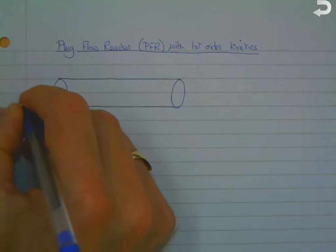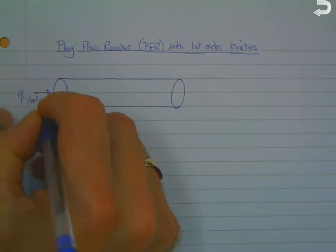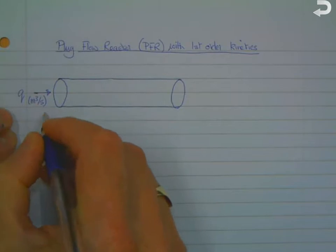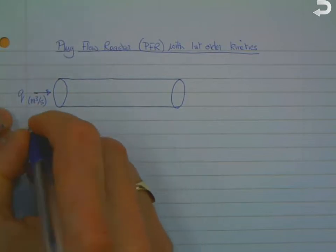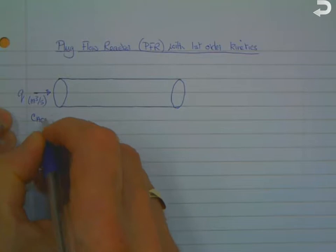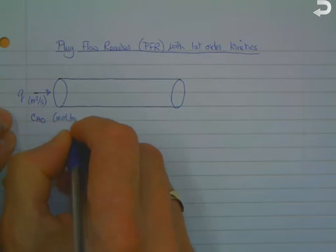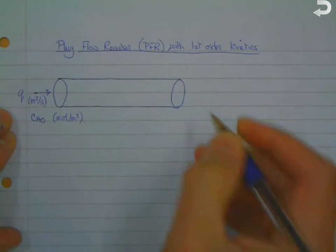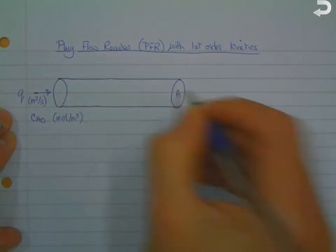We've got an inlet flow of Q meters cubed per second with an inlet concentration of our starting component A of CA0 moles per cubic meter. We've got a cross-sectional area of A.